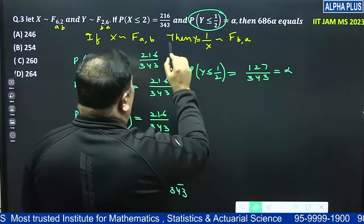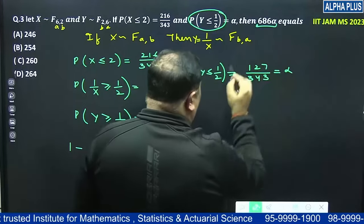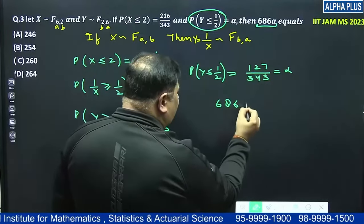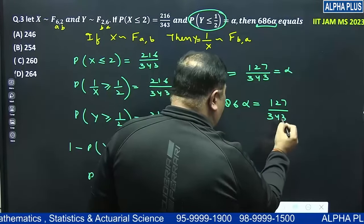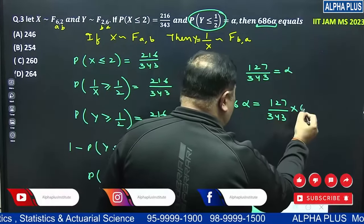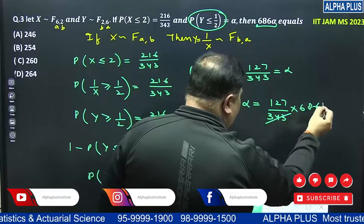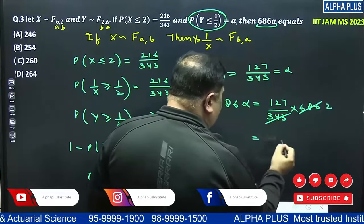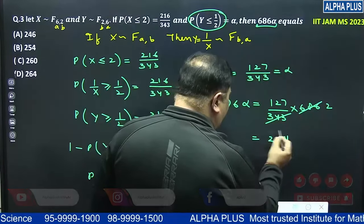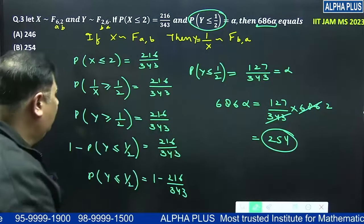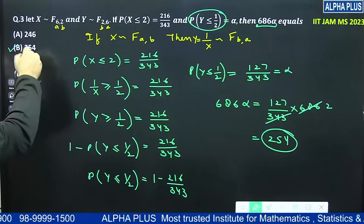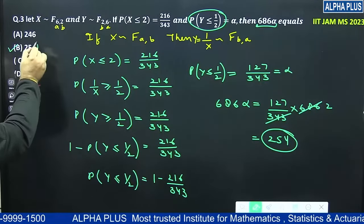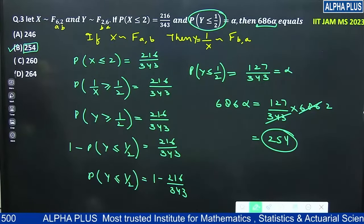Now example I want to ask, 686 alpha. So 686 alpha is equal to 127 upon 343 into 686, which is 2, which is 254 is the answer. So according to these options given, B is the answer. Other option A may be 254 and then we'll see 254 and so on. This is the first submission.